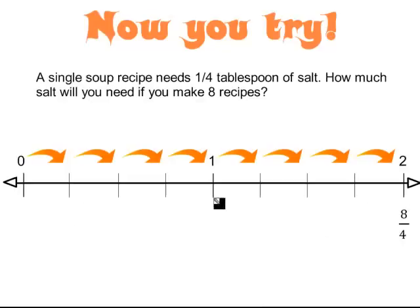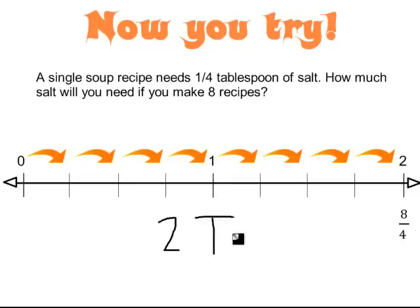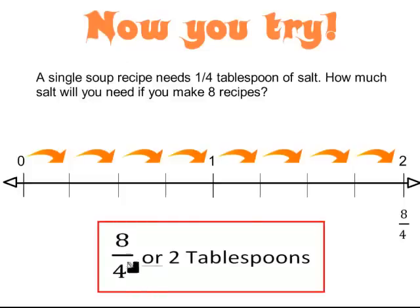I'll need more than one whole on the number line since I'm making 8 recipes. Counting in fourths: 1 fourth, 2 fourths, 3 fourths, 4 fourths, 5 fourths, 6 fourths, 7 fourths, and 8 fourths. 8 fourths lands on 2 wholes, which means 2 whole tablespoons of salt is needed to make 8 recipes. This capital T refers to tablespoons — so the answer is 8 fourths, or 2 tablespoons.